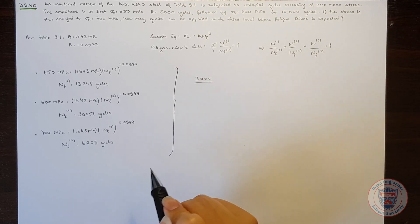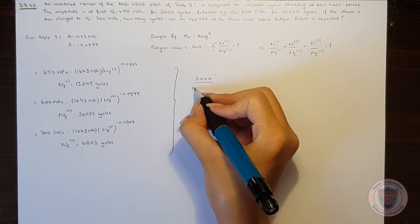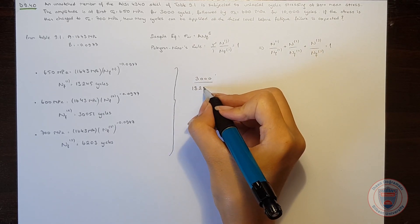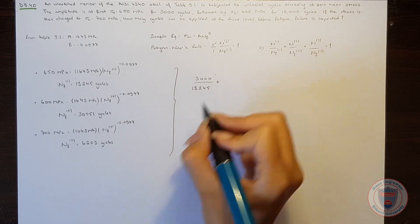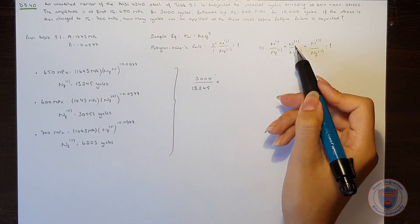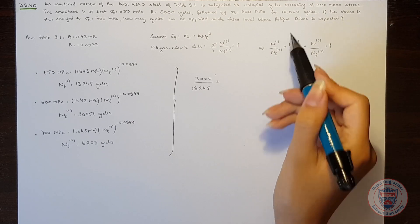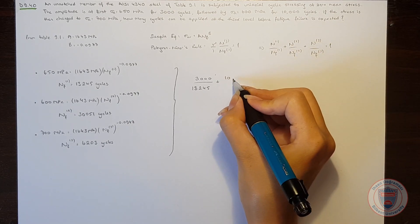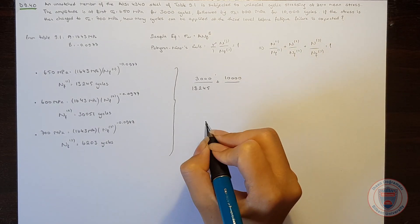So it will be 3000 over 13,245, plus at the second level it was used for 10,000 cycles,